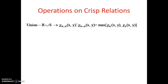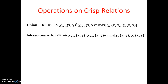The next operation is intersection: R intersection S. It is defined such that χ_(R intersection S)(x, y) is equal to the minimum of χ_R(x, y) and χ_S(x, y). So intersection means we need to take the minimum value out of R and S.